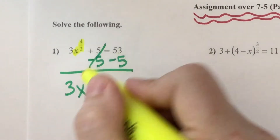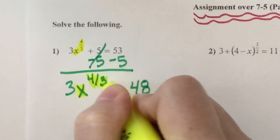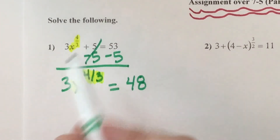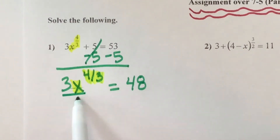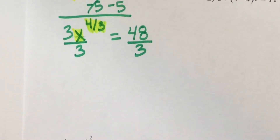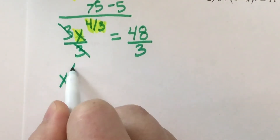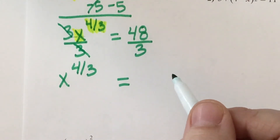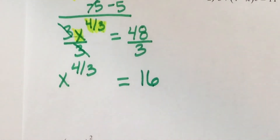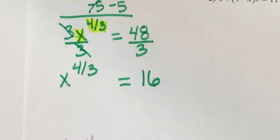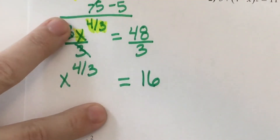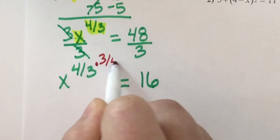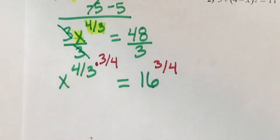I'm still trying to get this x with the fraction exponent by itself. So how will I get rid of the 3? I'll divide — since it's smushed, it's multiplied, so I get rid of multiplication with division. The 3's cancel out, leaving x to the 4/3, and 48 divided by 3 makes 16. Now that the variable with the fraction exponent is by itself, I'm ready for the reciprocal — and the reciprocal is 3/4. So I'm raising both sides to the 3/4 power.